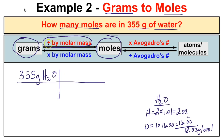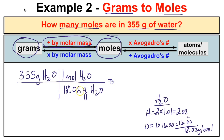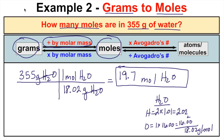To convert grams to moles we divide by the molar mass, which is 18.02. We put that at the bottom of our conversion statement, meaning there are 18.02 grams of water for every one mole of water. The unit grams of H₂O cancels, leaving us with moles of H₂O. We take 355 divided by 18.02 and end up with 19.7. So 355 grams of water is the same as 19.7 moles of water.